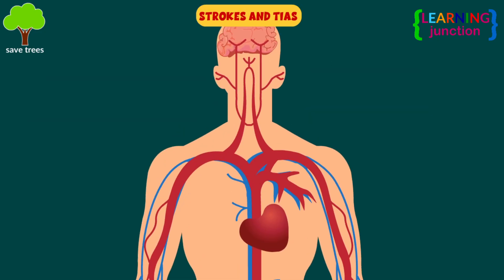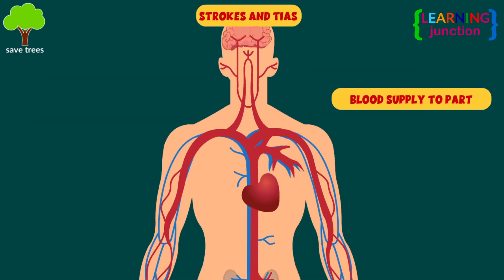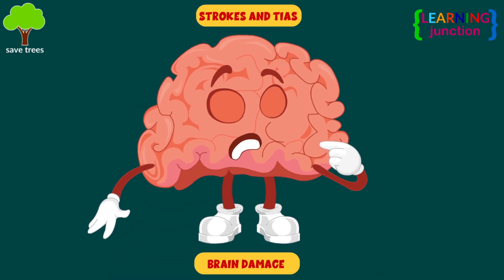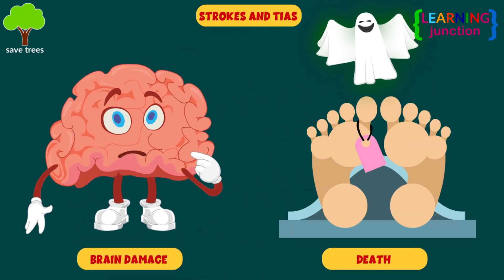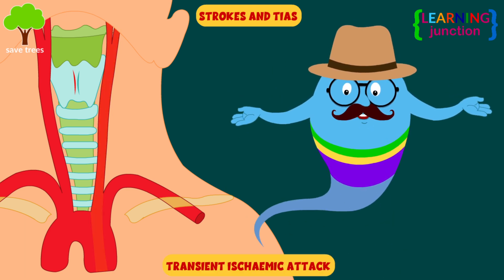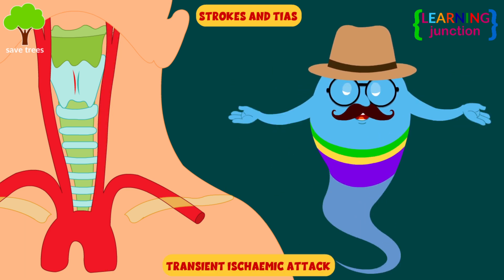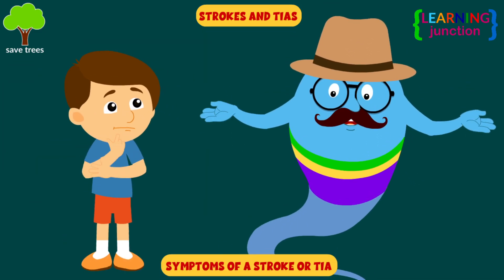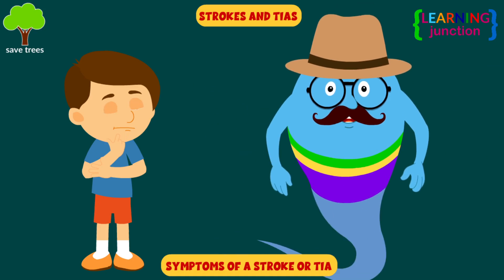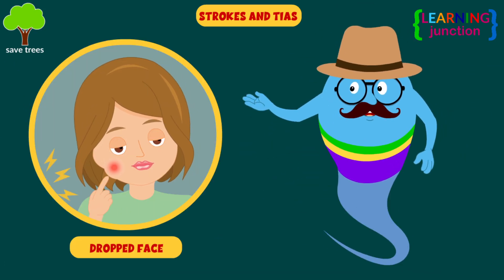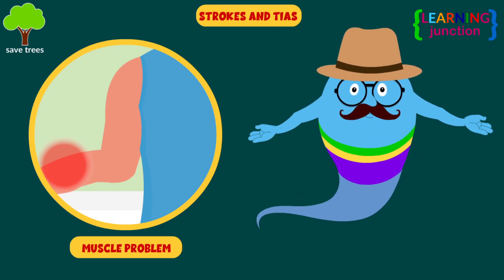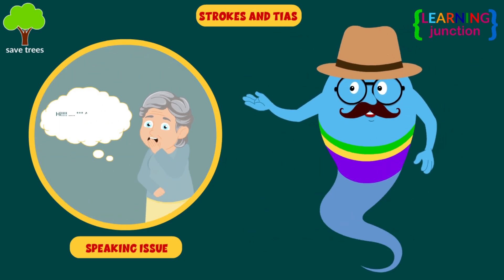Strokes and TIAs. A stroke is where the blood supply to part of the brain is cut off, which can cause brain damage and possibly death. A TIA, or transient ischemic attack, is identical, but the blood flow to the brain is only temporarily disrupted. The main symptoms of a stroke or TIA are: the face may have drooped on one side, the person may not be able to lift both arms, and their speech may be slurred or garbled.